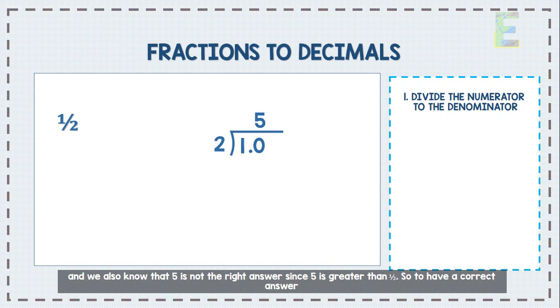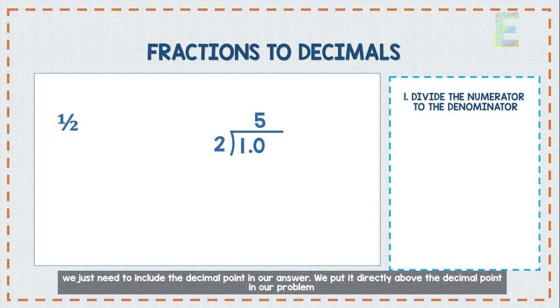And we also know that 5 is not the right answer since 5 is greater than one-half. So, to have a correct answer, we just need to include the decimal point in our answer. We put it directly above the decimal point in our problem.